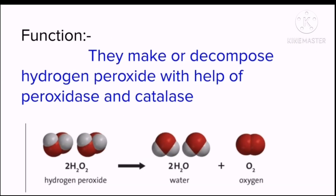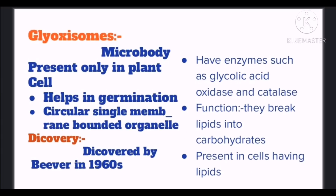Peroxisomes are very crucial because they convert highly toxic substances to less toxic substances. They convert alcohol to peroxide, which is less harmful than alcohol. In animals they are mostly present in the liver, because the liver detoxifies. In case of water deficiency, peroxide is converted into H₂O and O₂ is produced — this is called the decomposition of peroxide, done with the help of the enzyme catalase. This water is used to remove harmful substances from the body, such as ammonia, in the form of urine.